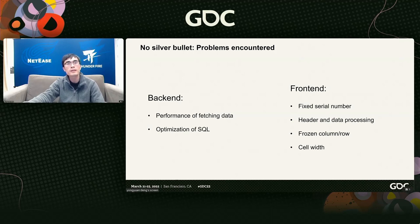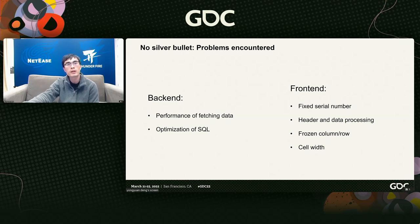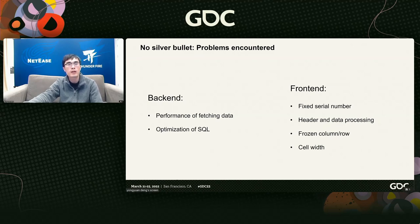After deciding to implement using the Ant Design table, there are still some key issues to address. On the backend, there are two main problems: performance of fetching data and the pagination of queries. On the frontend, there are three main problems: serial numbers, header and data processing, and freezing rows and columns. I'll share these three main frontend problems in detail.